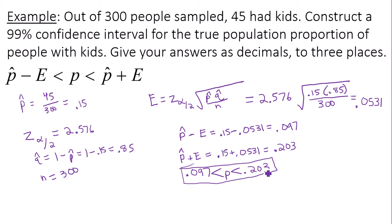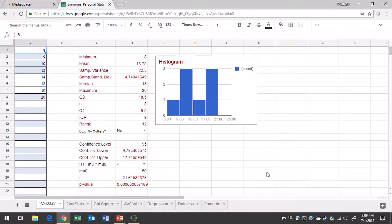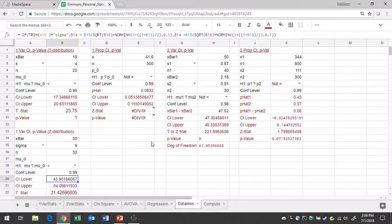Now to use technology to get this for us, because this can be a very tedious calculation, we're going to go to Google Sheets. We will go to the data list tab. And we're doing a confidence interval for a proportion. So go to columns D and E.